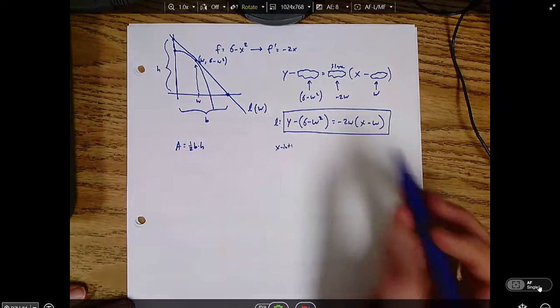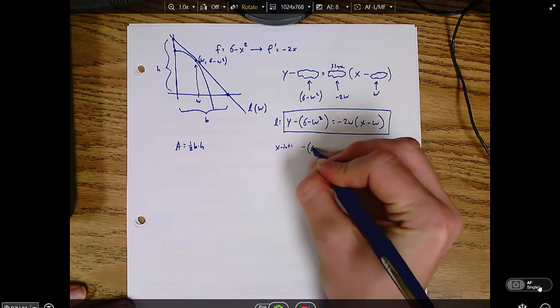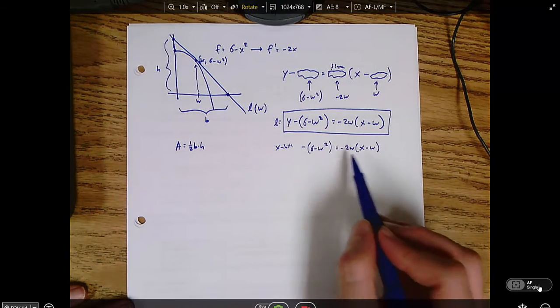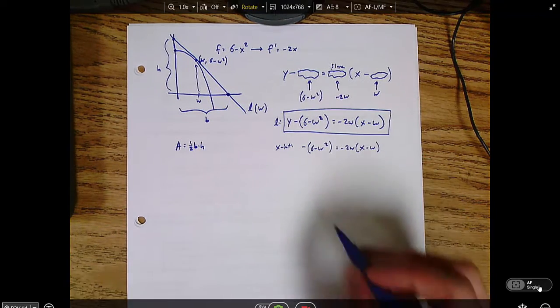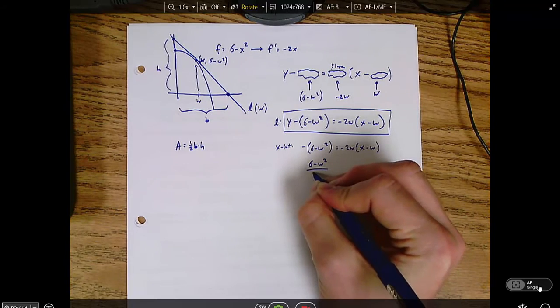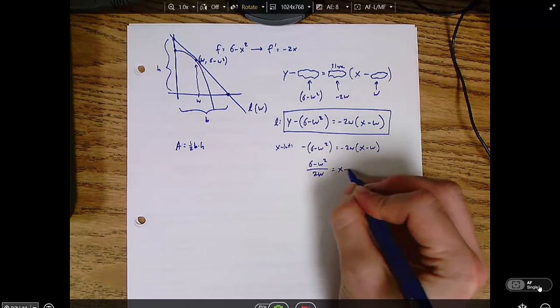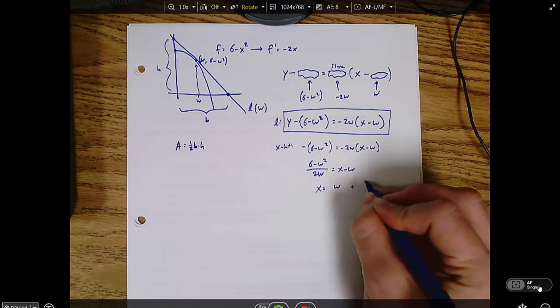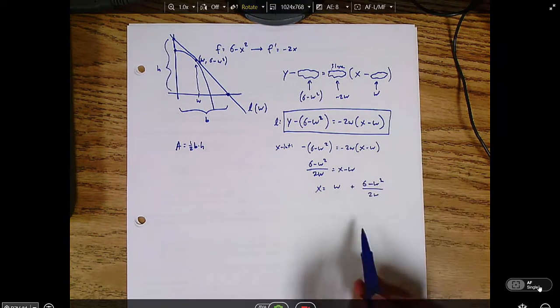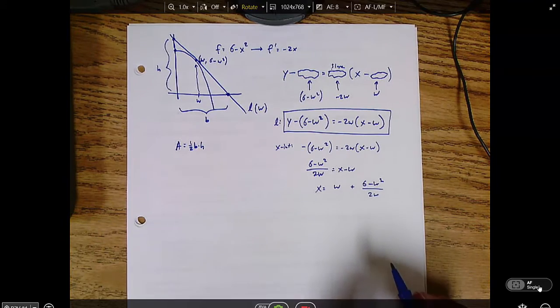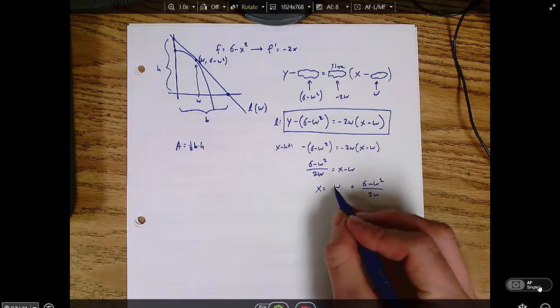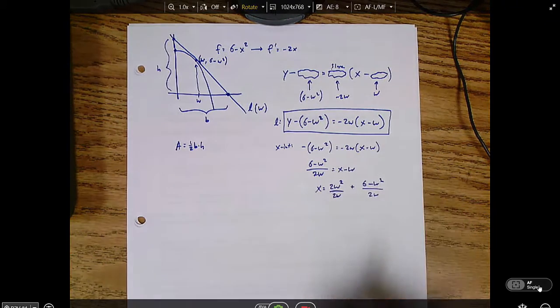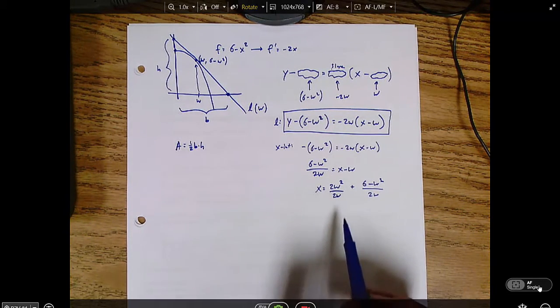So the x-intercept is what we get when y equals 0. So I'm going to plug in 0 for y, and then I'm going to solve for x. So let's go ahead and divide both sides by 2w. And then that gives me x minus w. So x equals w plus 6 minus w squared over 2w. And I like to combine these under the same denominator, because I think that's going to make simplification easier later. So let's multiply on the top and bottom by 2w.